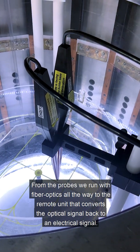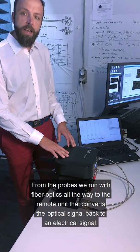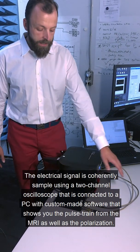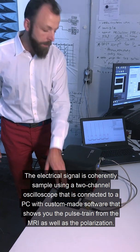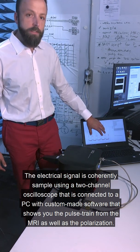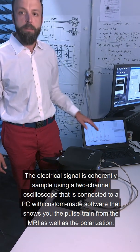From the probes we run with fiber optics all the way to the remote unit that converts the optical signal back to an electrical signal. The electrical signal is coherently sampled using a two-channel oscilloscope that is connected to a PC with custom-made software that shows you the pulse train from the MRI as well as the polarization.